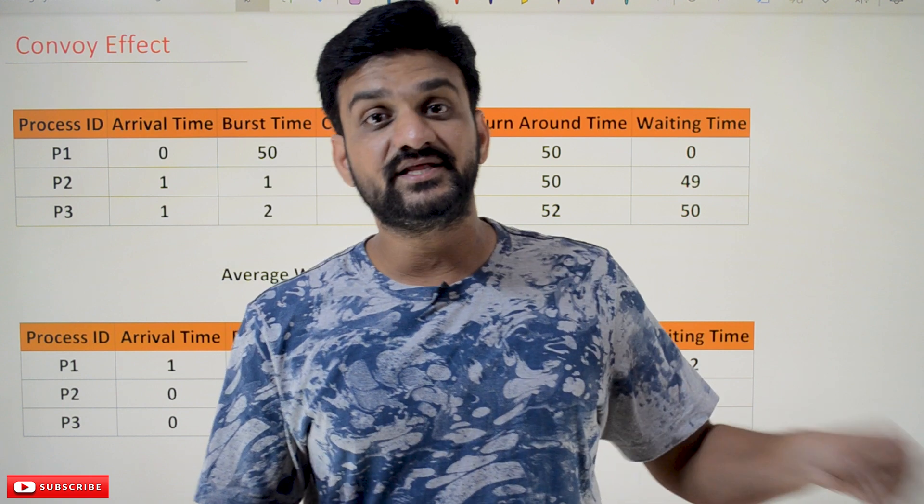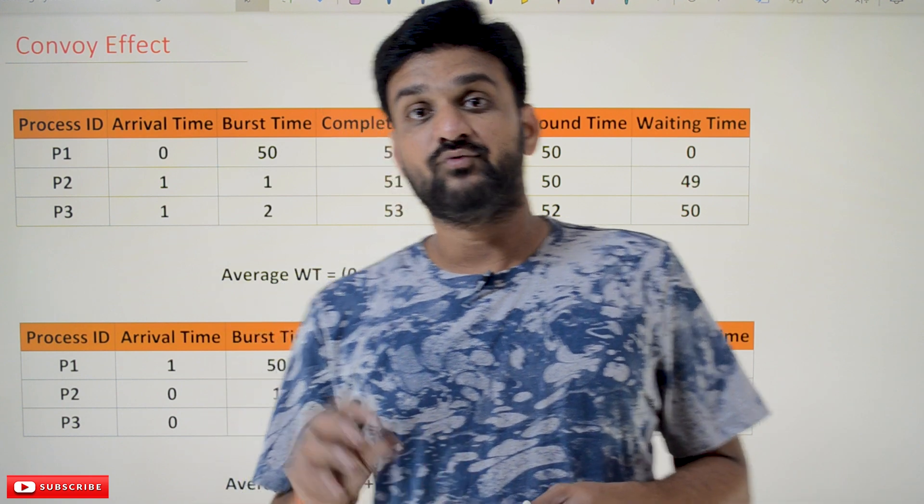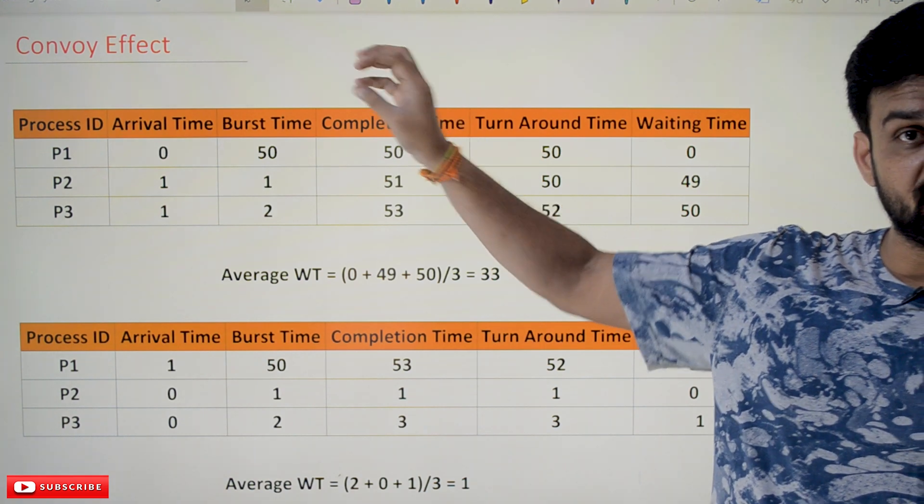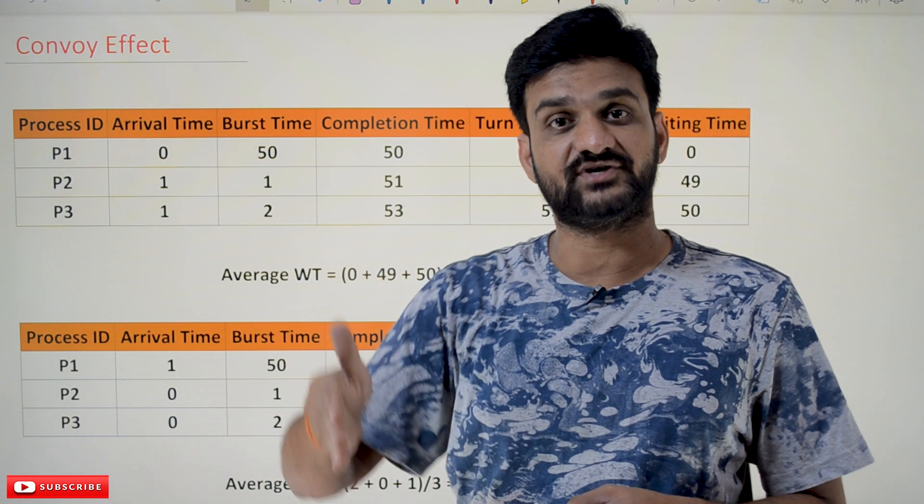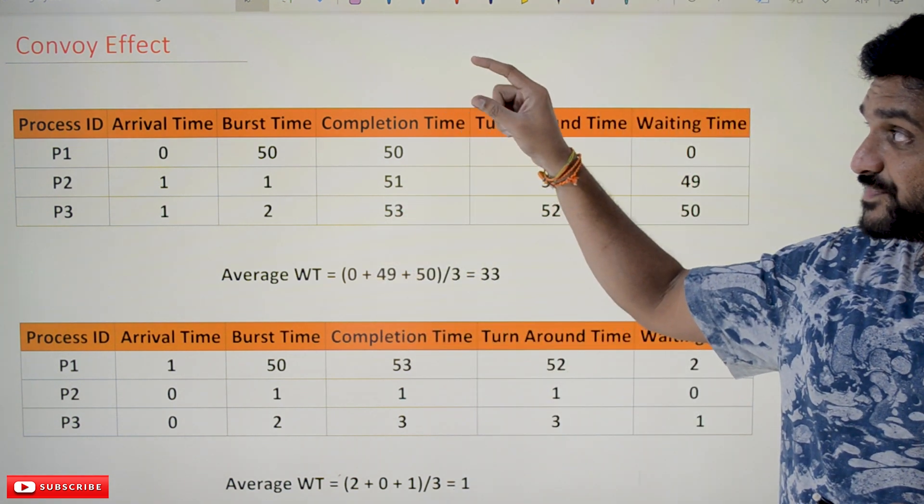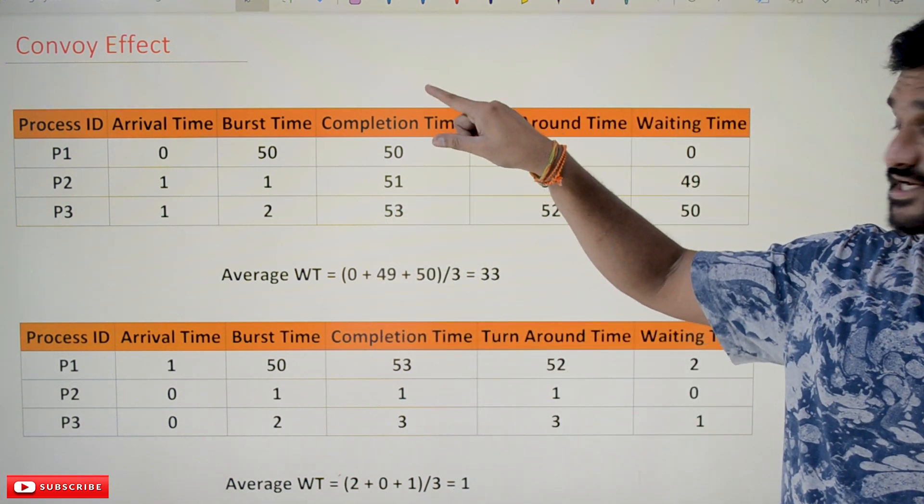Now, what is this convoy effect? This is the disadvantage that comes in FCFS (first-come-first-serve) CPU scheduling algorithm. So this disadvantage, the name itself—convoy effect—is stating that.